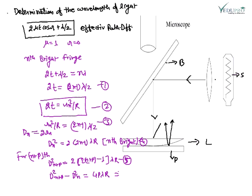Therefore, λ = (d²ₙ₊ₚ - d²ₙ)/4pr. This is the wavelength formula for bright fringes. Similarly, for dark fringes, the same equation applies: λ = (d²ₙ₊ₚ - d²ₙ)/4pr.